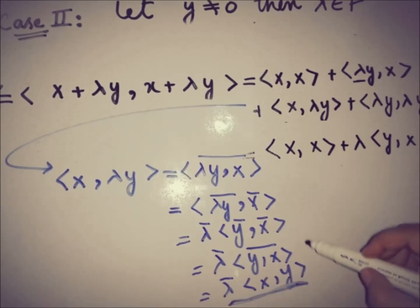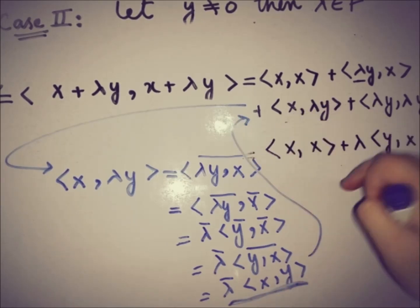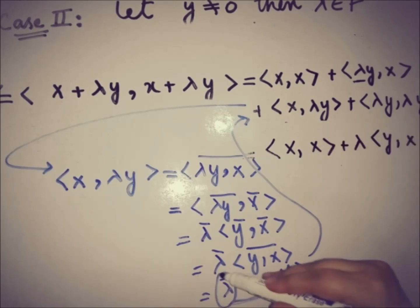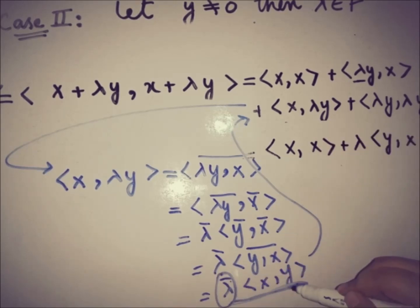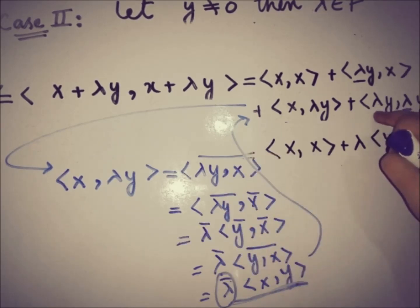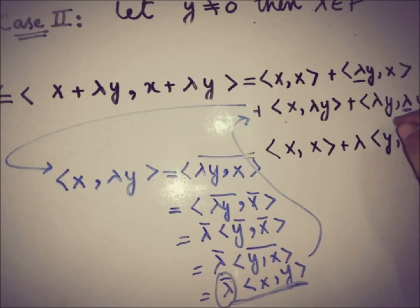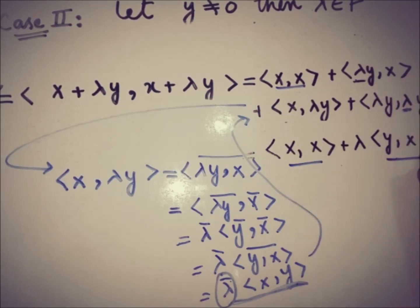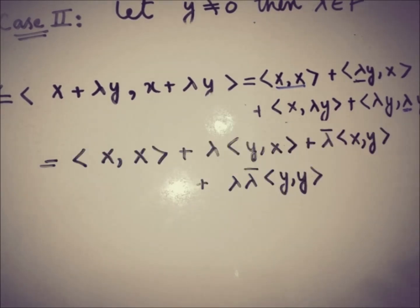So x + λy inner product expansion gives us: ⟨x, x⟩ + λ̄·⟨x, y⟩ + λ·⟨y, x⟩ + λλ̄·⟨y, y⟩. We extract lambda from each term using linearity and the conjugate property of the inner product.